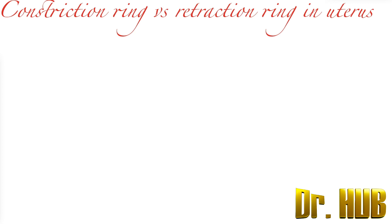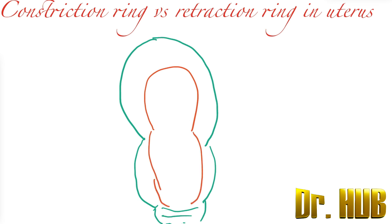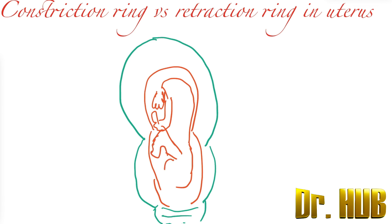Let's look at the diagram. This is how the retraction ring will look. Here lies the fetus, and the elbow collides with the line. This is the retraction ring.